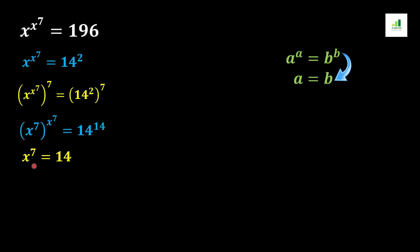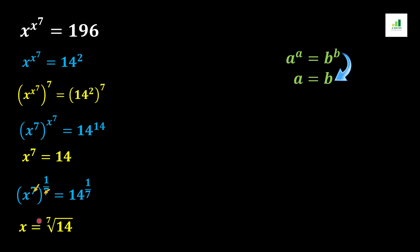Now in the next step we get the value of x by applying 1 over 7 power on both sides of the equation. The 7 and 7 cancel out, and we get x equal to the 7th root of 14, or 14 to the power of 1 over 7. This is the value of x for this expression.